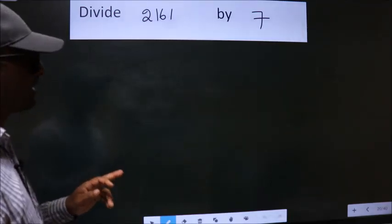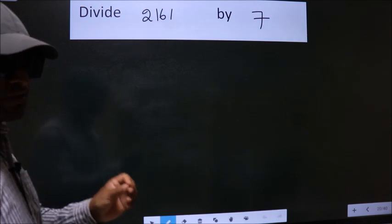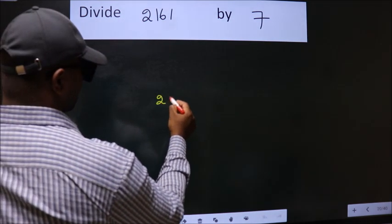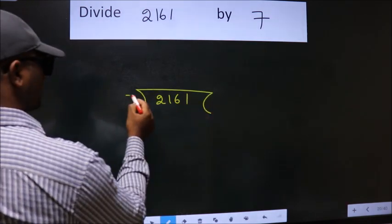Divide 2161 by 7. To do this division, we should frame it in this way. 2161 here, 7 here.